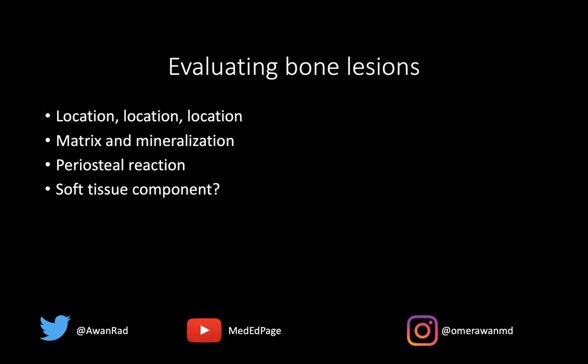Is there a soft tissue component extending beyond the bone? If so, that's a sign of an aggressive lesion. Are there satellite lesions — other lesions occurring in the bone or neighboring bones? Osteosarcoma has a predilection for satellite lesions, and metastatic disease can also present with multiple lesions. Are there any other ancillary findings, such as lymphadenopathy in the surrounding tissues? All of these are very important when evaluating bone lesions.